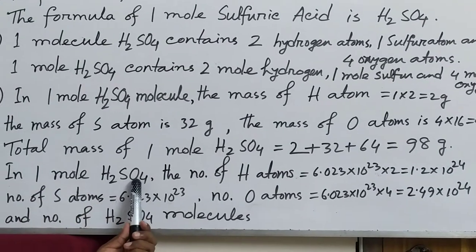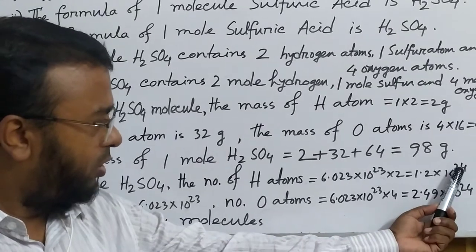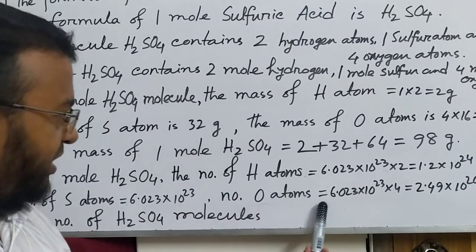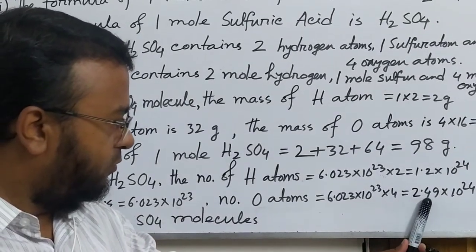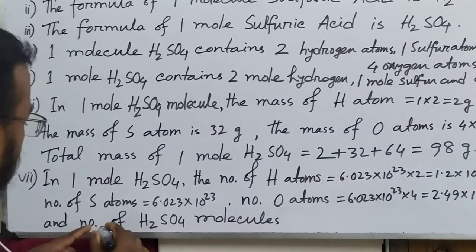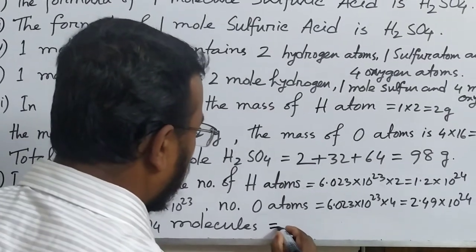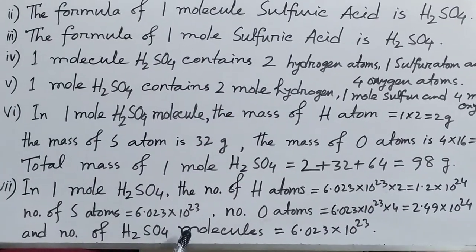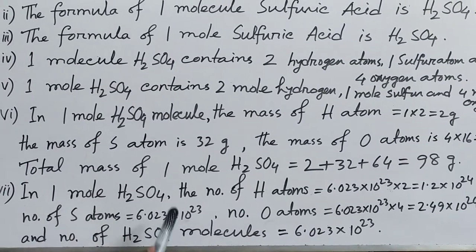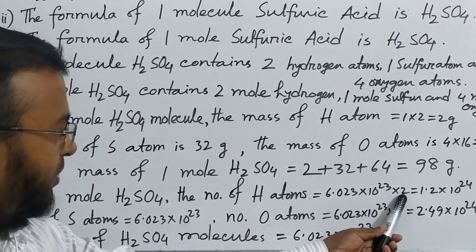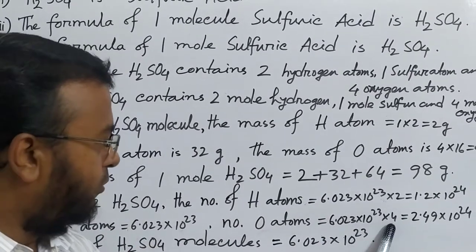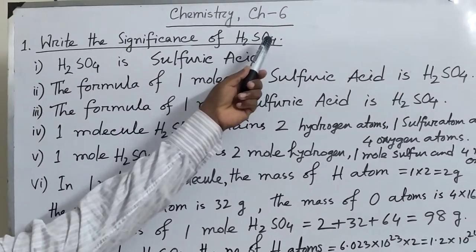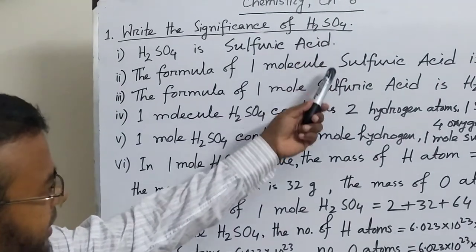So in 1 mole of sulfuric acid: the number of hydrogen atoms is 1.2 × 10²⁴, the number of sulfur atoms is 6.023 × 10²³, and the number of oxygen atoms is 2.49 × 10²⁴. The number of molecules is 6.023 × 10²³ — the Avogadro number. Atoms are multiplied by their count: hydrogen is 2, oxygen is 4. That is all about the significance of H2SO4.